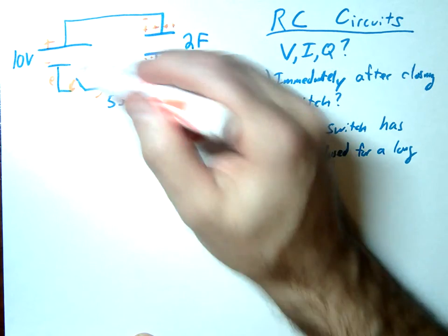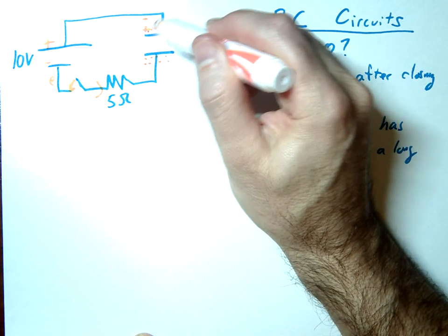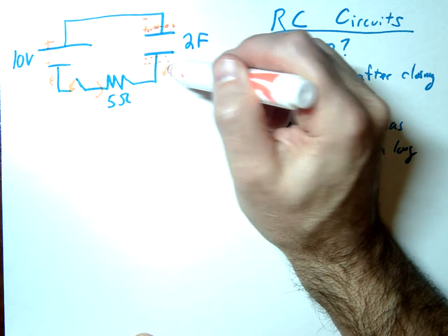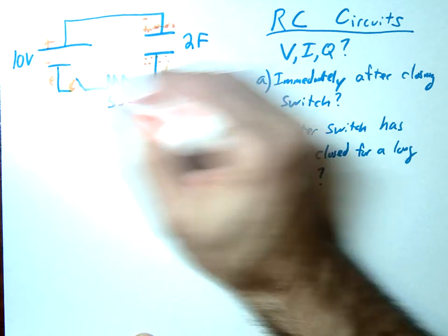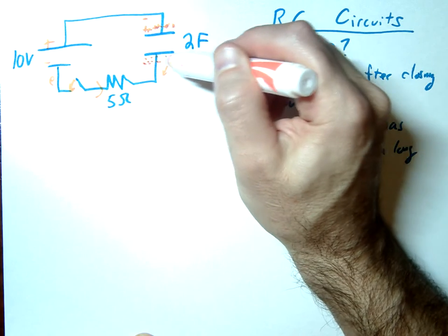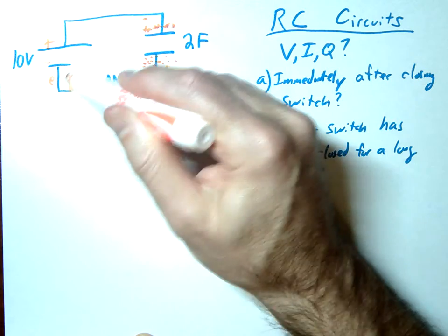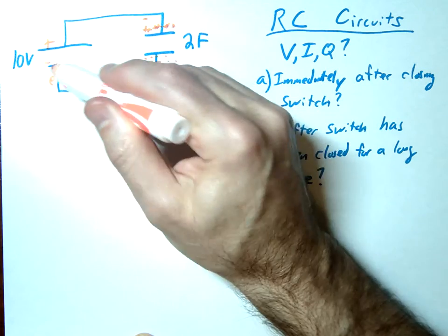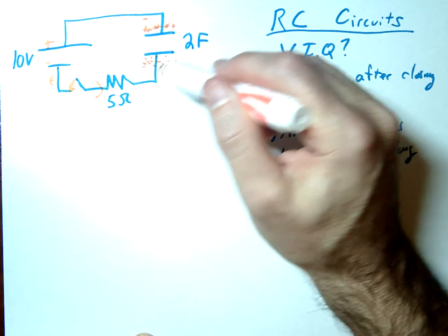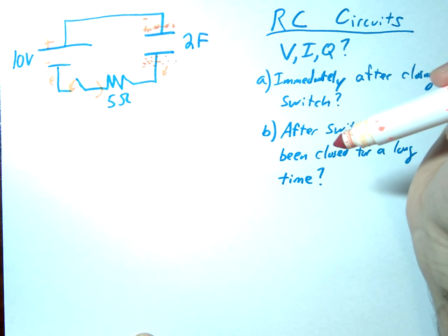Now, over time, these negatives are going to start to build up. And as these negatives start to build up, and these positives start to build up, they're going to push back against this push. Eventually, as this builds up, it's going to push back with the exact same force as the battery. And at that point, the flow of charge, or the current in the circuit, would actually stop. So that's kind of the concept of this problem.